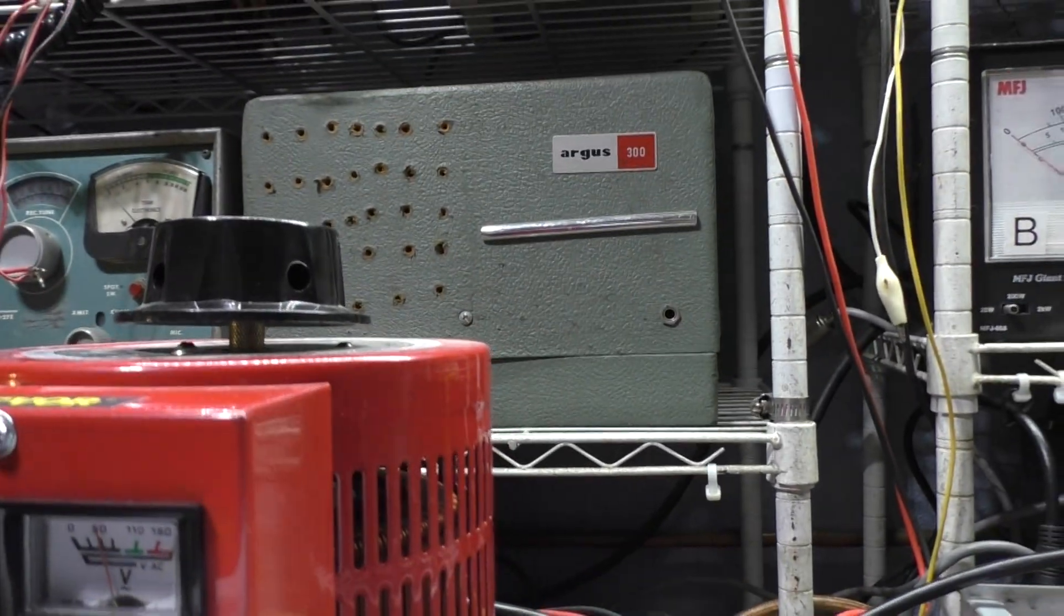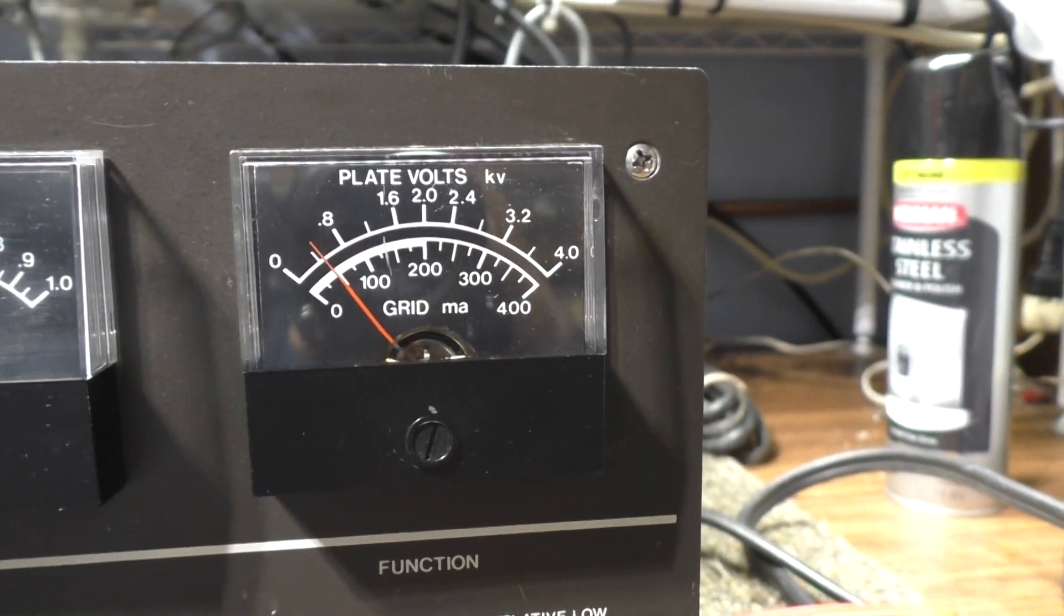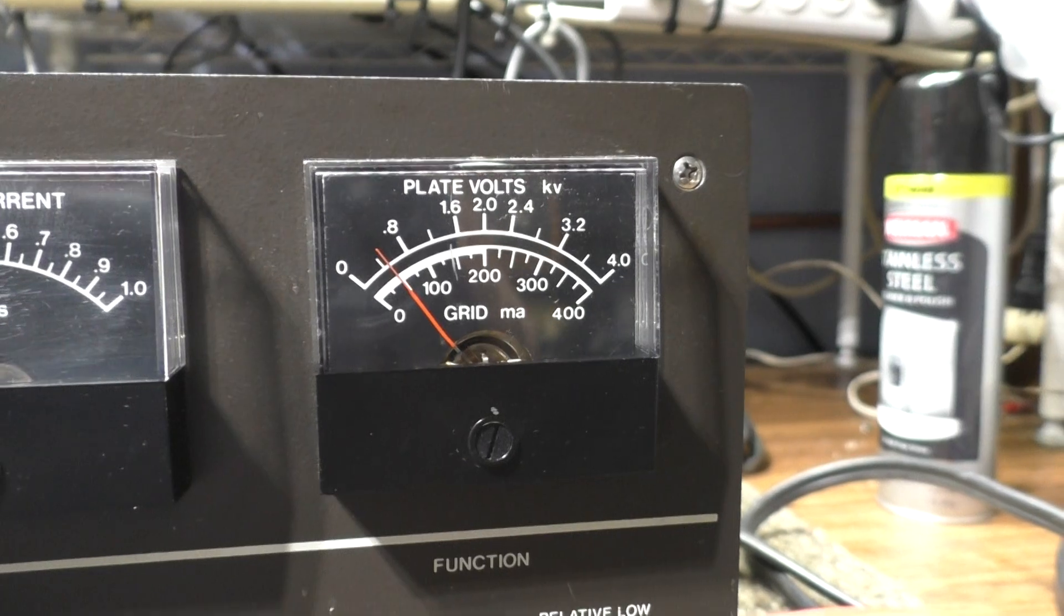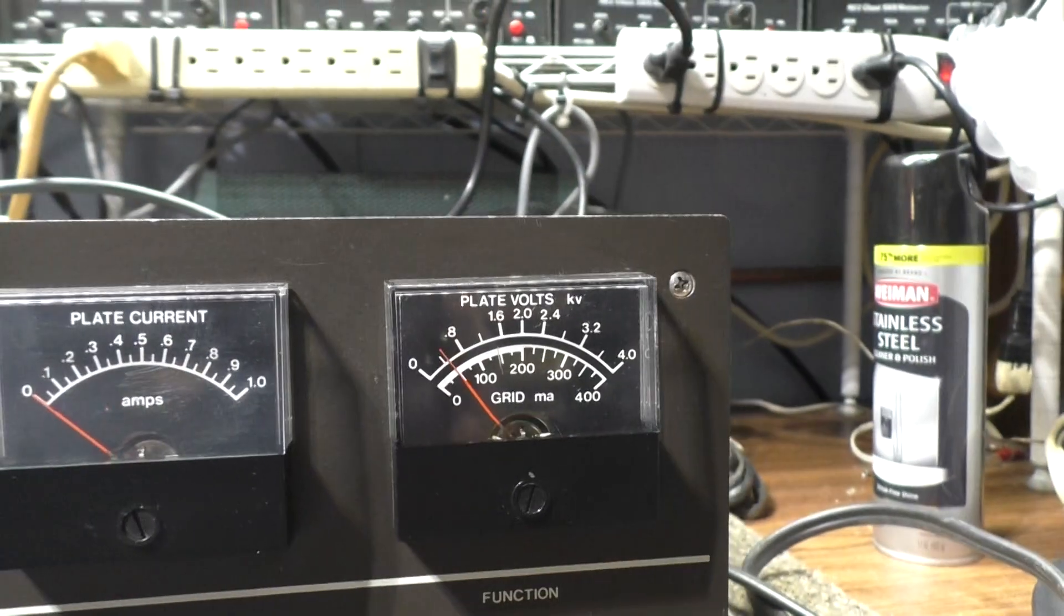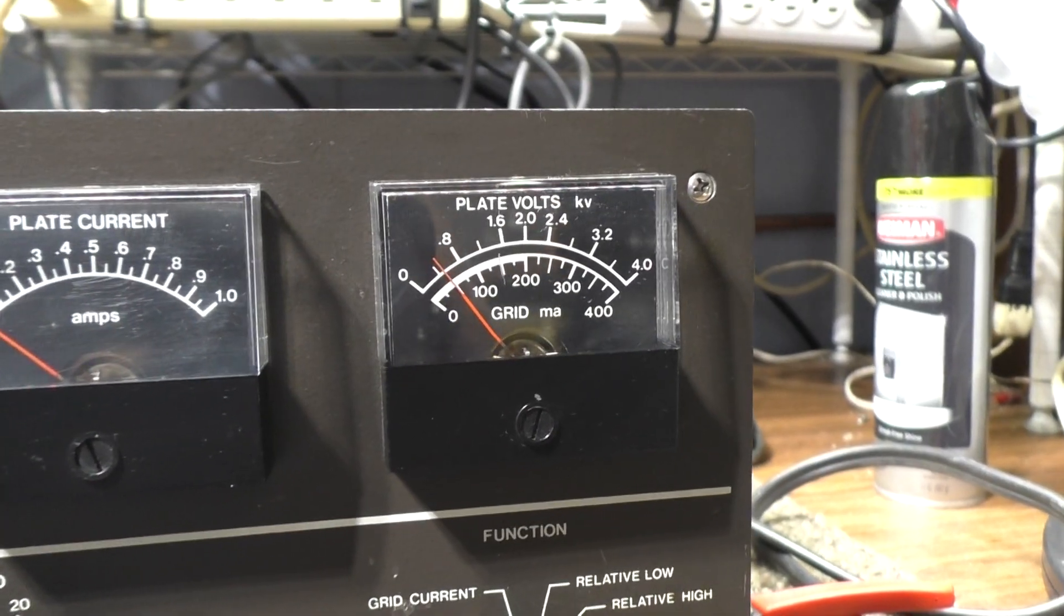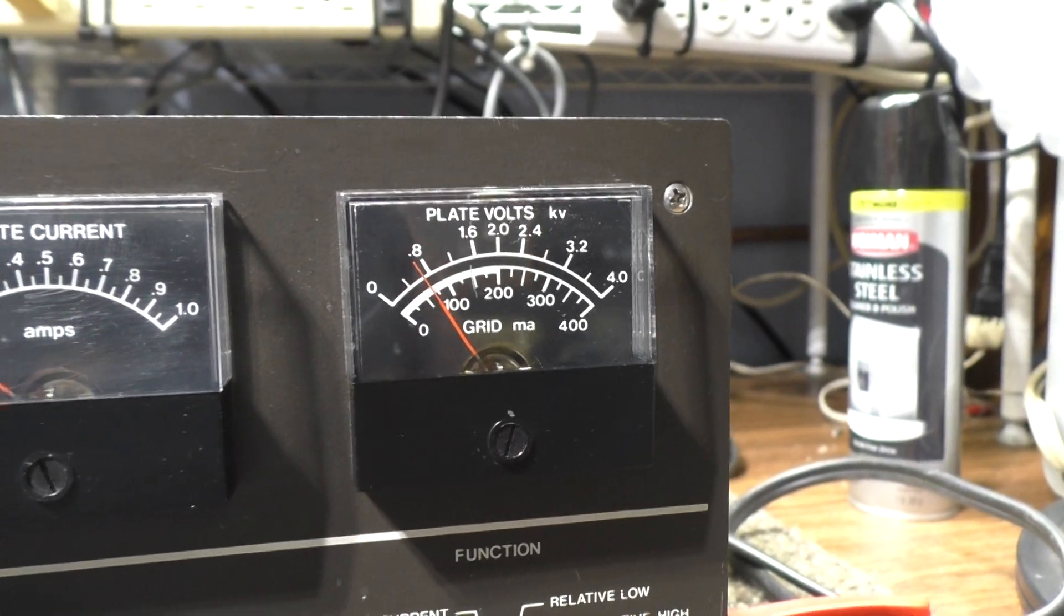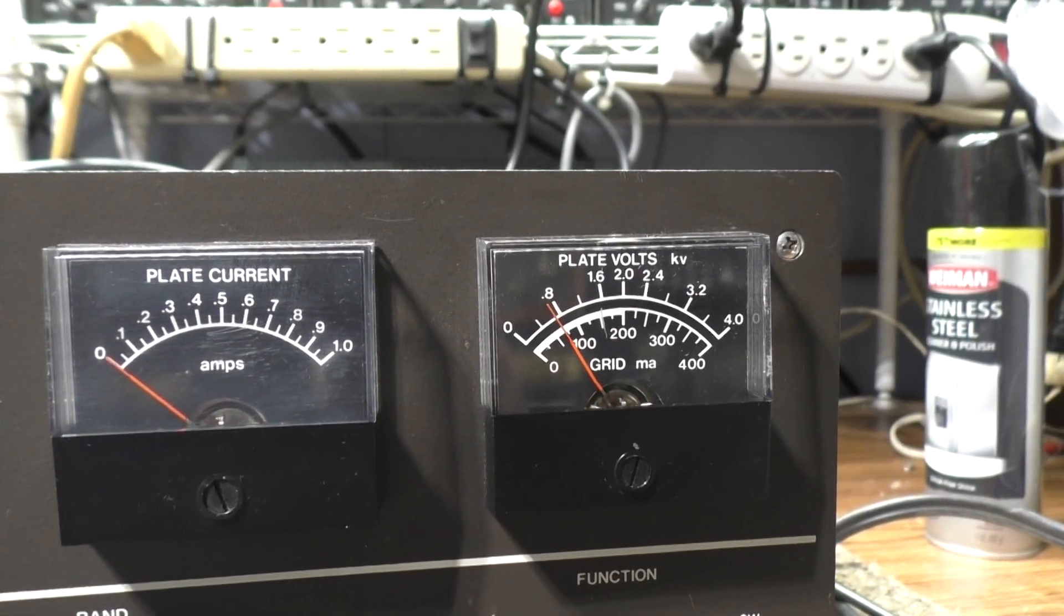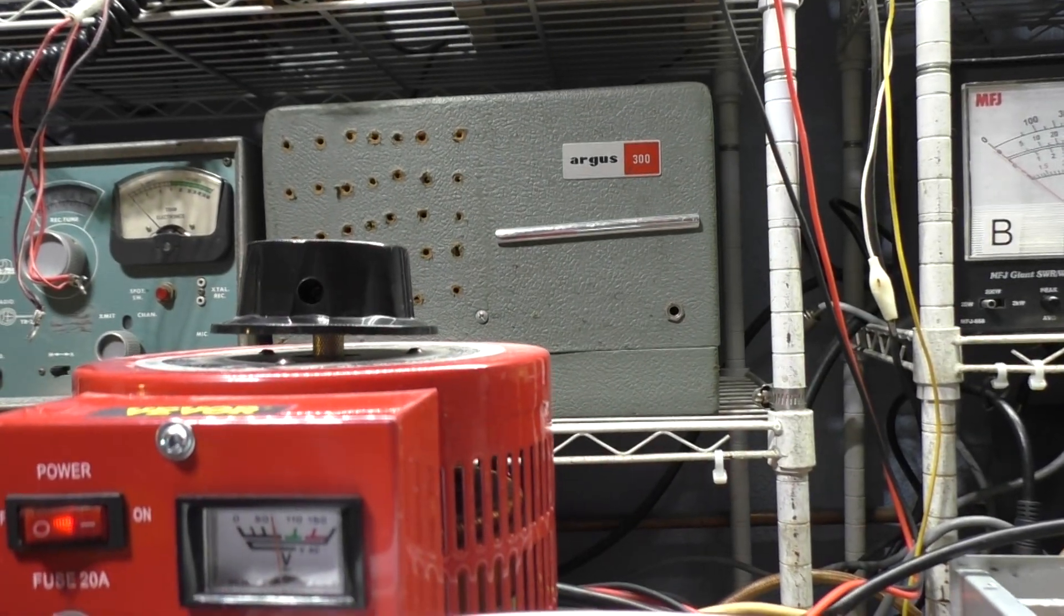With about 50 volts in, this thing is only pulling about 17 watts—almost nothing—and you can see the plate volts is up to about 600 volts. So 50 volts in, 600 volts out, not pulling any amps. That's a pretty good indication that nothing's dead-shorted, at least yet. I'm on about 60 now, about 775 volts, only pulling 28 watts, so we're still nice and low.